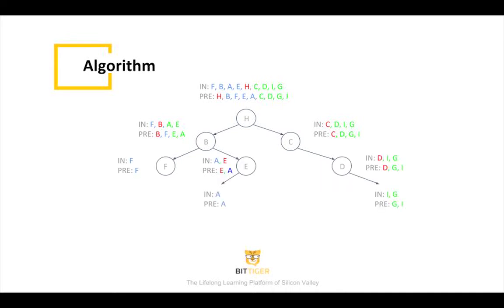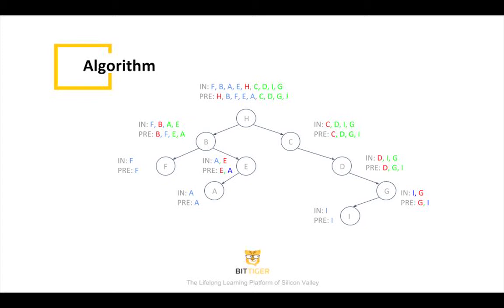Put F directly under B's left tree because there is only one element in the sequence. As for B's right tree, we find E is the root and A will be E's left tree. Using the same procedure for C's right tree, D is the root and G and I will be in D's right subtree. By checking the pre-order sequence, G will be the root and I will be G's left tree. This is the overall demonstration for applying the algorithm on the example. Feel free to pause and go over all the recursive calls to make sure you understand all the procedures.